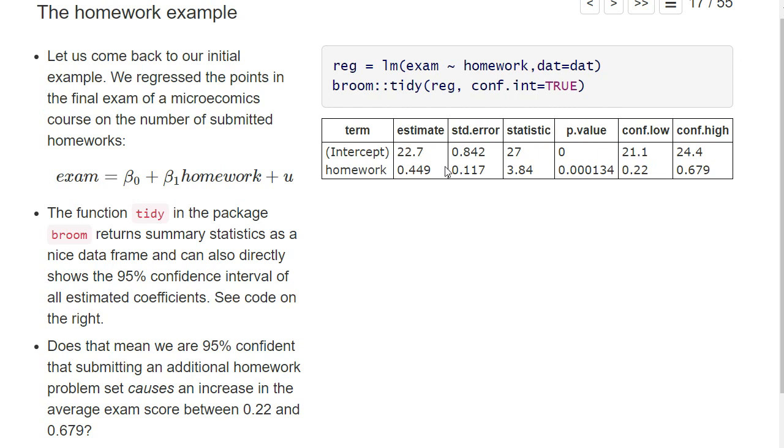We see here our estimate, a positive estimate for the homework variable. This means more submitted homeworks correspond to a larger exam score. In particular, one additional homework increases the predicted exam score by around 0.449 points.